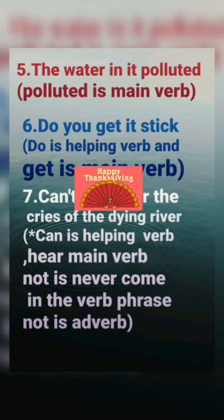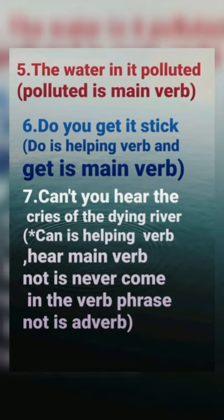Fifth: 'The water in it polluted.' 'Polluted' is the main verb. So 'polluted' is the verb phrase. Sixth: 'Do you get its step?' 'Do' is the helping word and 'get' is the main word. 'Do get' is the verb phrase.